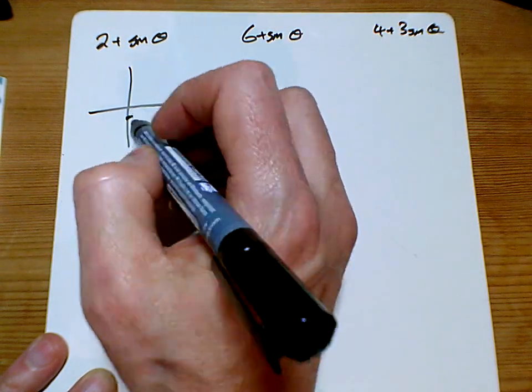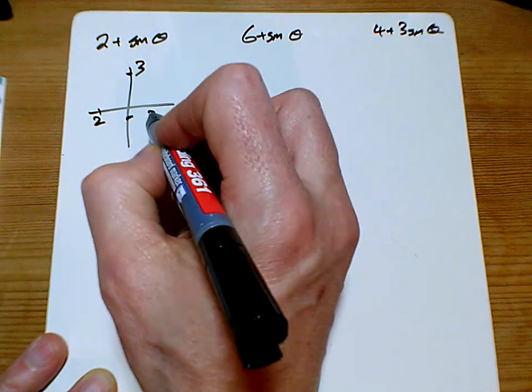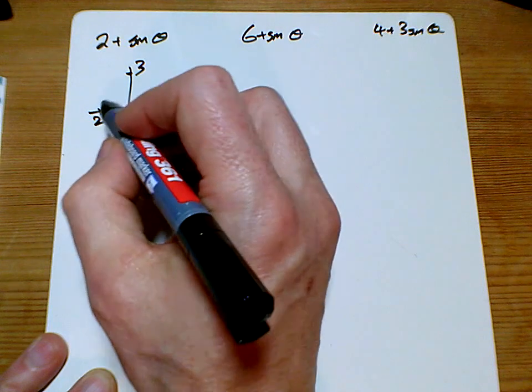So for the first one we've got this sort of shape here, that part there.